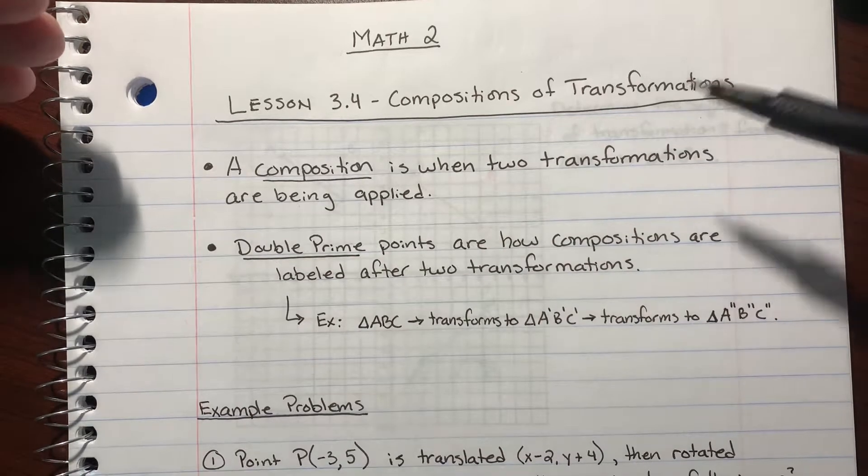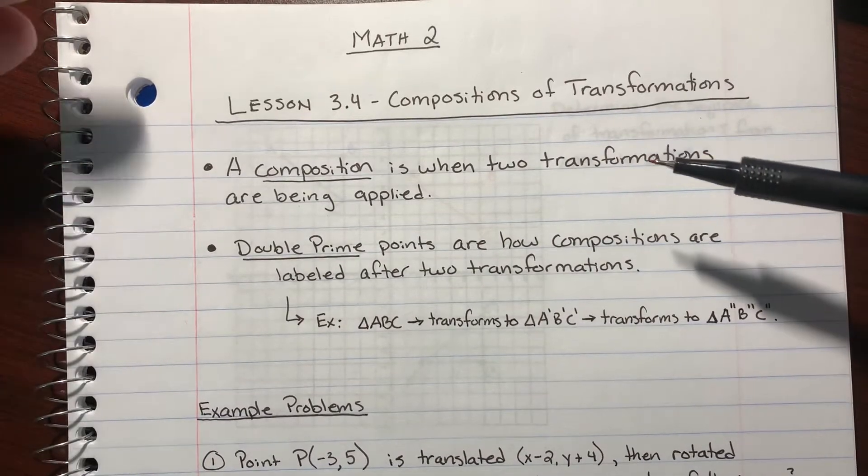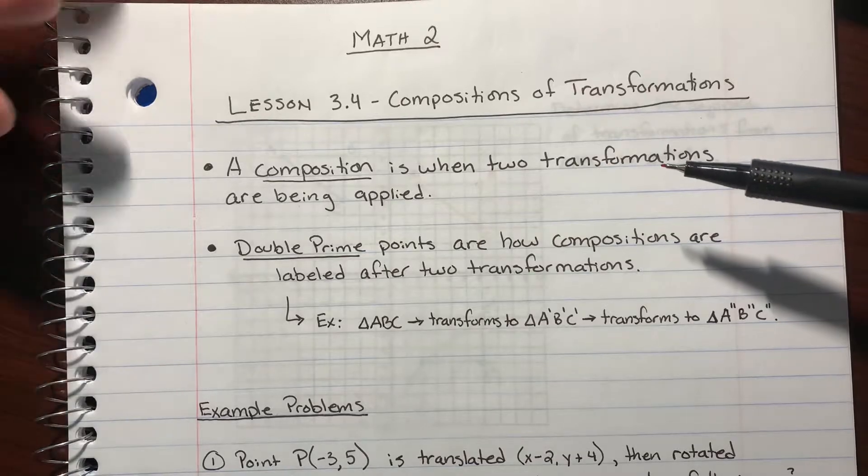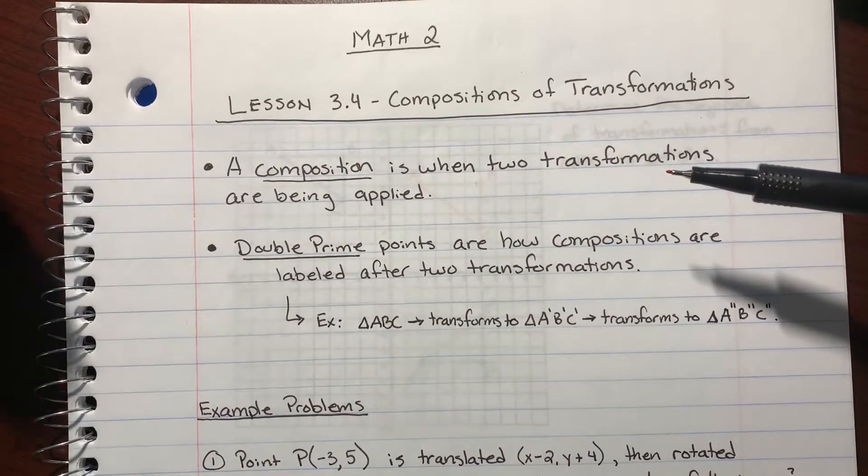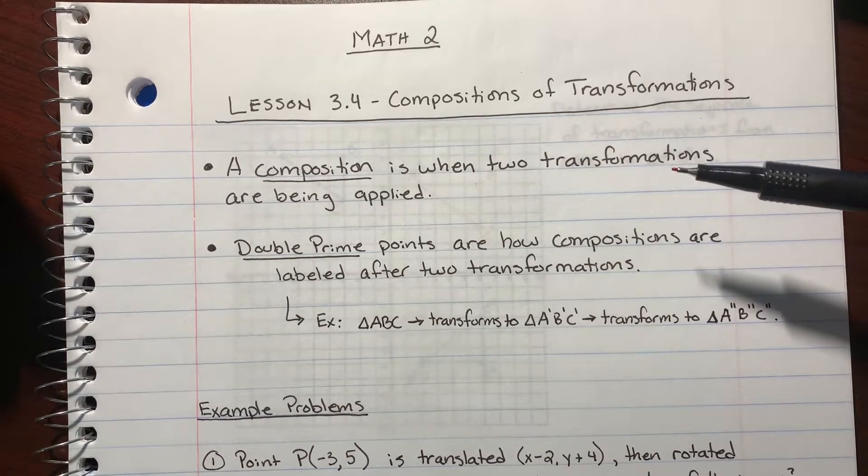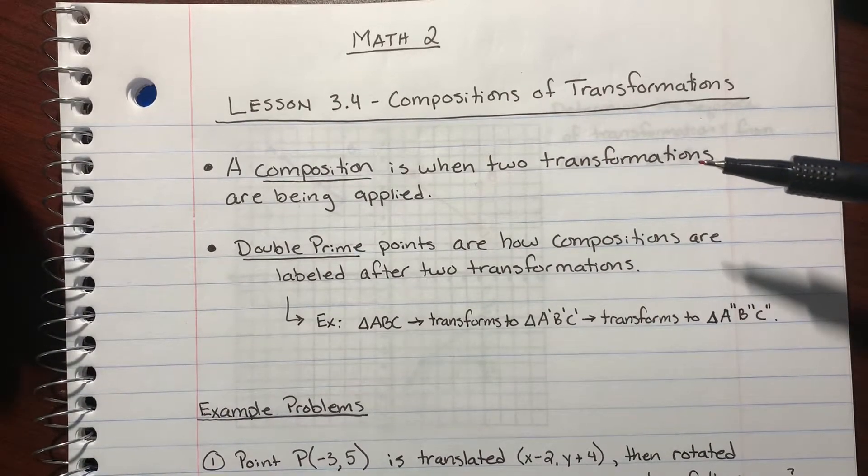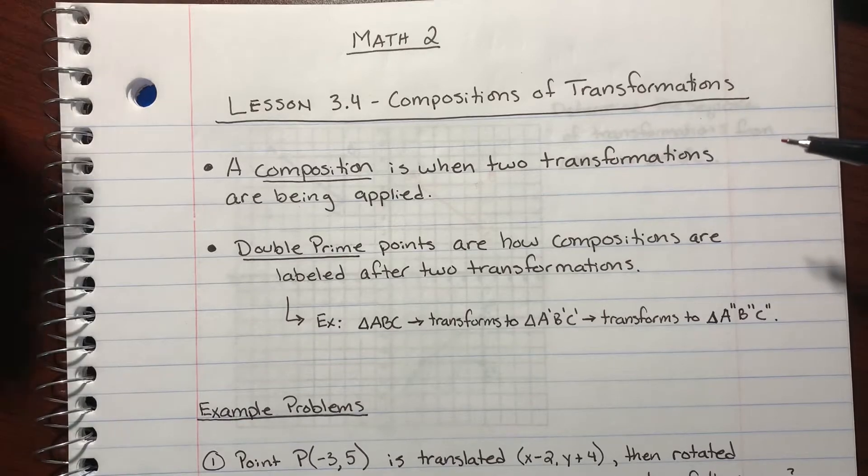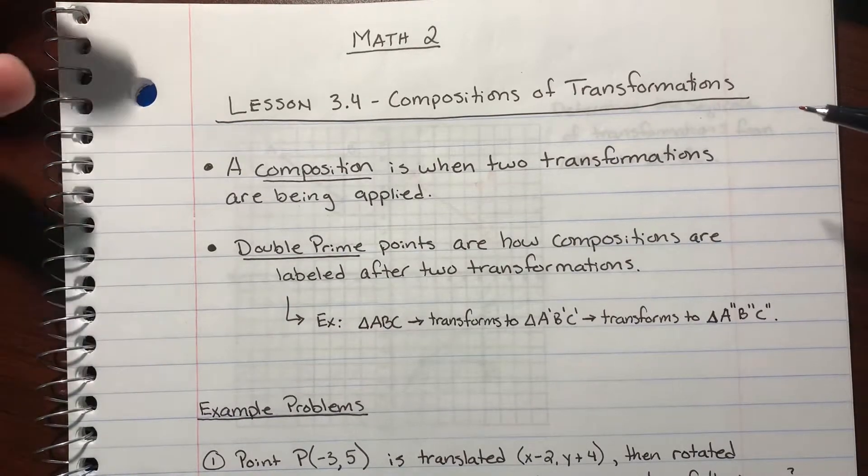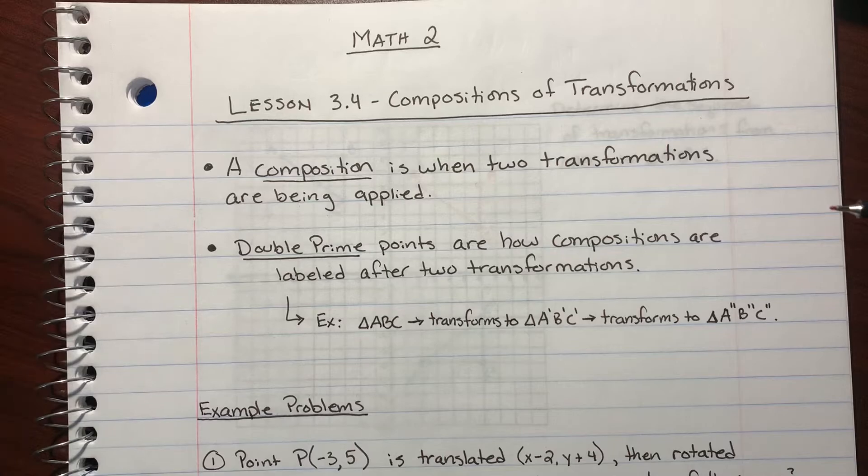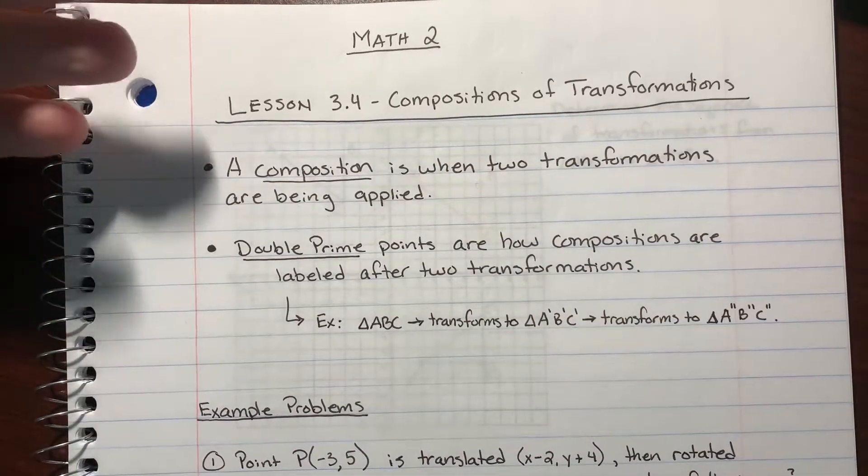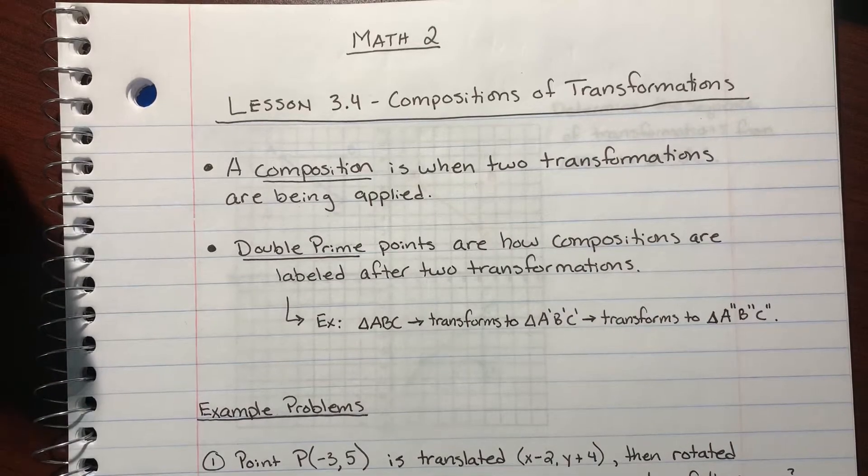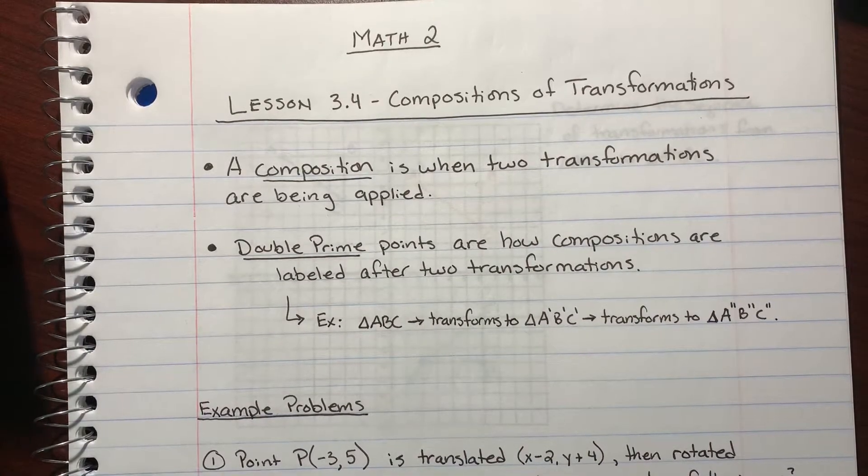So a composition is just whenever you have two transformations being applied. Say, for example, you have a triangle and you want to translate it using one rule, and then right after you translate it, you then reflect it over, say, the y-axis, or maybe you rotate it 90 degrees or something. So it's whenever you have one transformation being applied and then you apply a second transformation to those prime points.